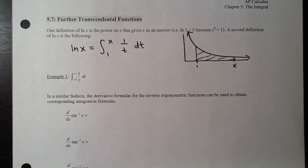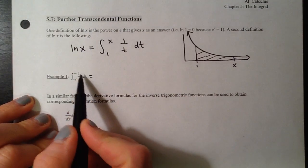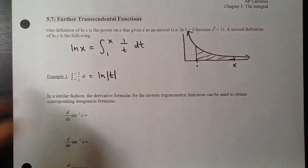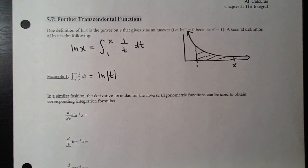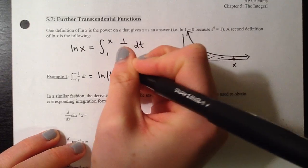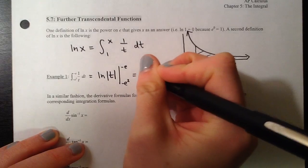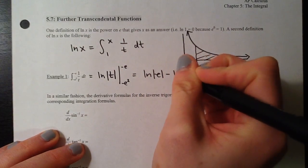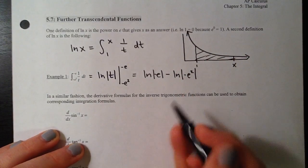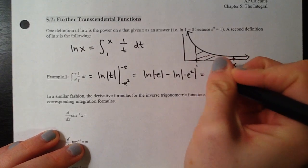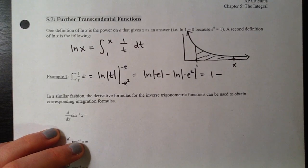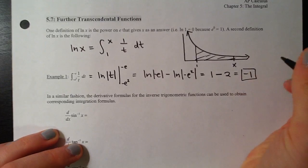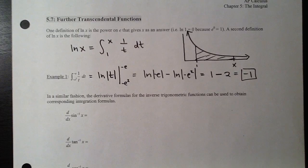You can see how this is defined in a calculus way rather than an algebra way. The antiderivative of 1 over T is natural log of the absolute value of T. The reason we throw in absolute value is because we're not allowed to plug negative numbers into a natural log function — we have to guarantee we're not going to get a negative input. For example, integrating from negative E squared to negative E: we get natural log of |−E| minus natural log of |−E²|, which simplifies to 1 minus 2, giving us negative 1.